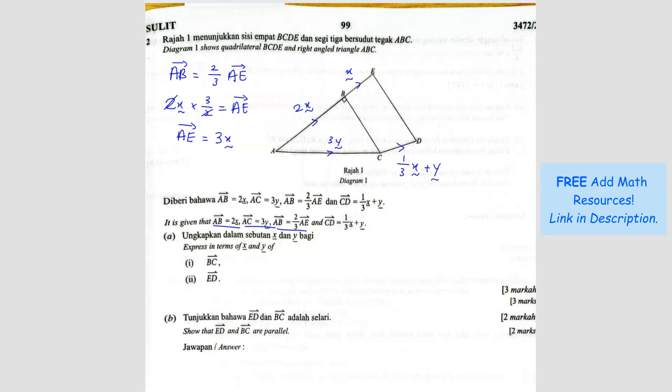Let's see. Question A, express in terms of X and Y of BC. So we are trying to find BC. Question A1. BC is here. So we can go BA plus AC. So BA will be negative 2X and AC will be 3Y. So done.